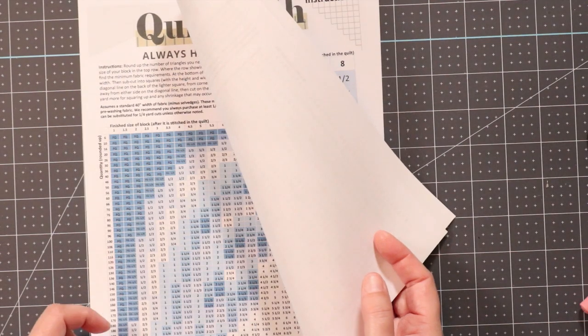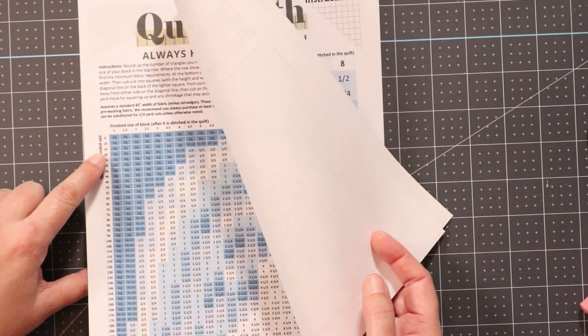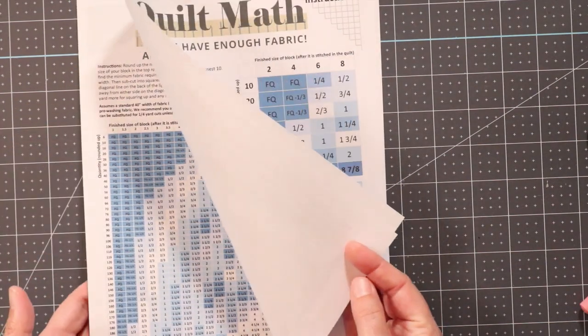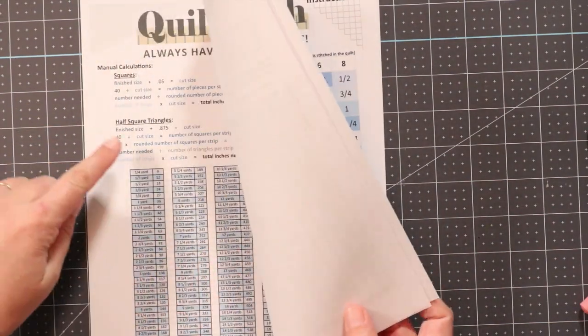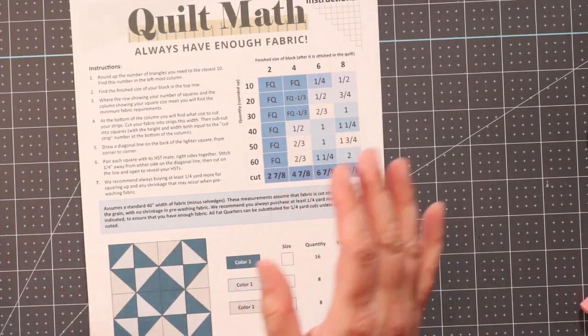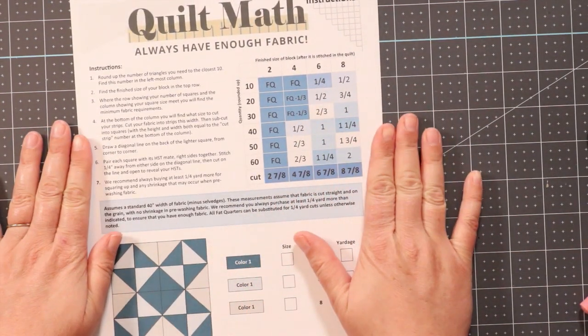Half square triangles are on the tens and sixes because half square triangles come in pairs, so we went ahead and rounded that up for you already to the sixes. And there's also a sheet that allows you to do the math by hand if you prefer. And that's how easy it is to use quilt math.